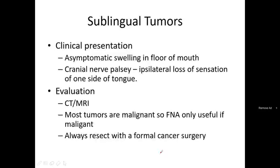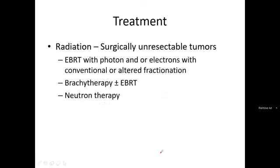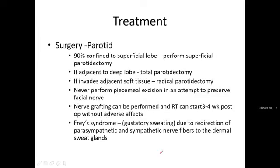Sublingual tumor clinical presentation includes asymptomatic swelling in the floor of the mouth, tongue palsy, and loss of sensation on one side of the tongue. CT/MRI is used for evaluation. Most sublingual tumors are malignant, so FNA is only used to confirm malignancy; they are always resected with formal cancer surgery. Lymph node spread risk is higher, with distant spread to lungs, bone, and liver.